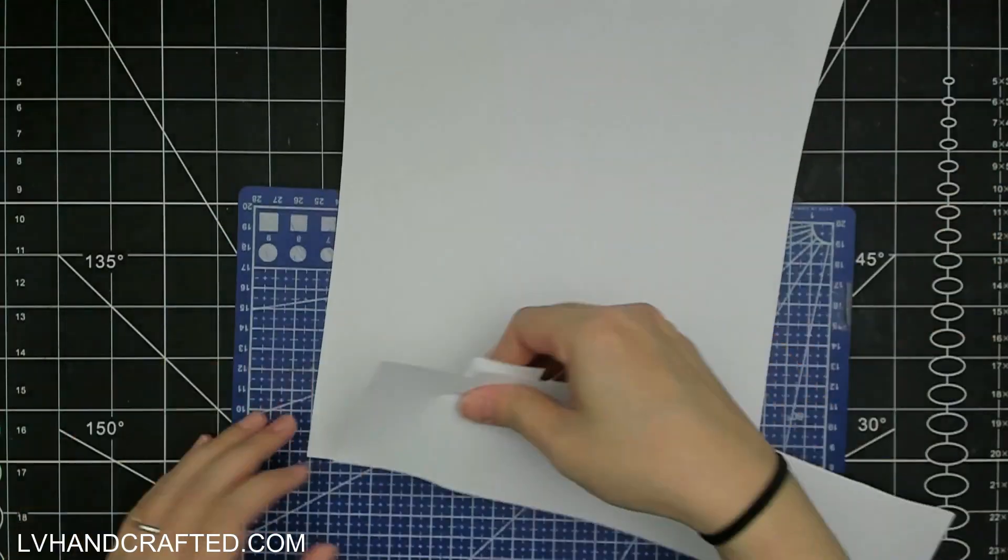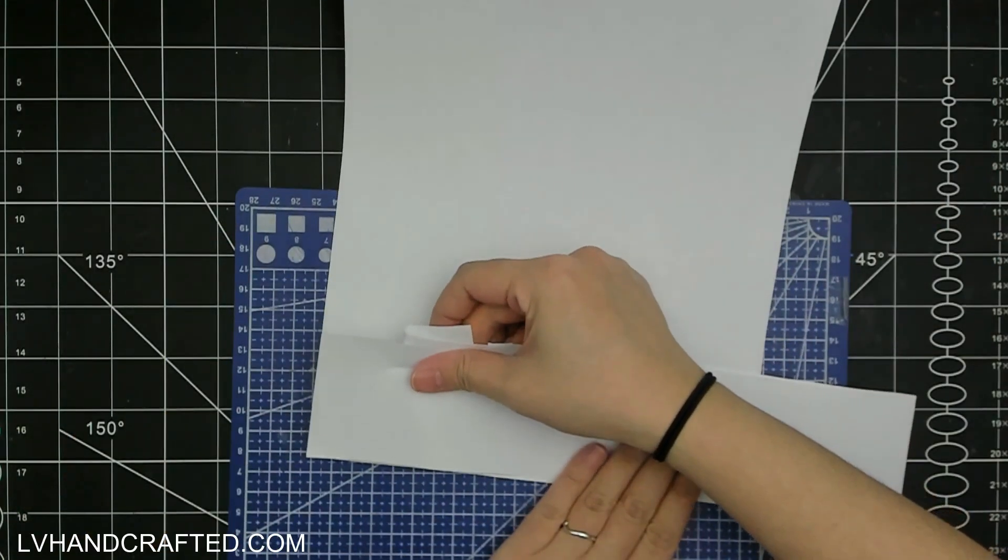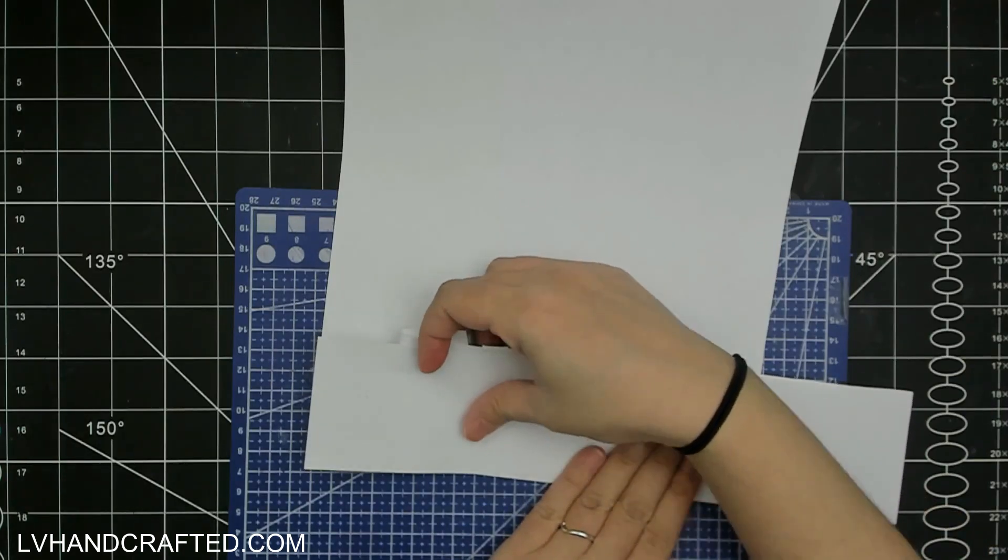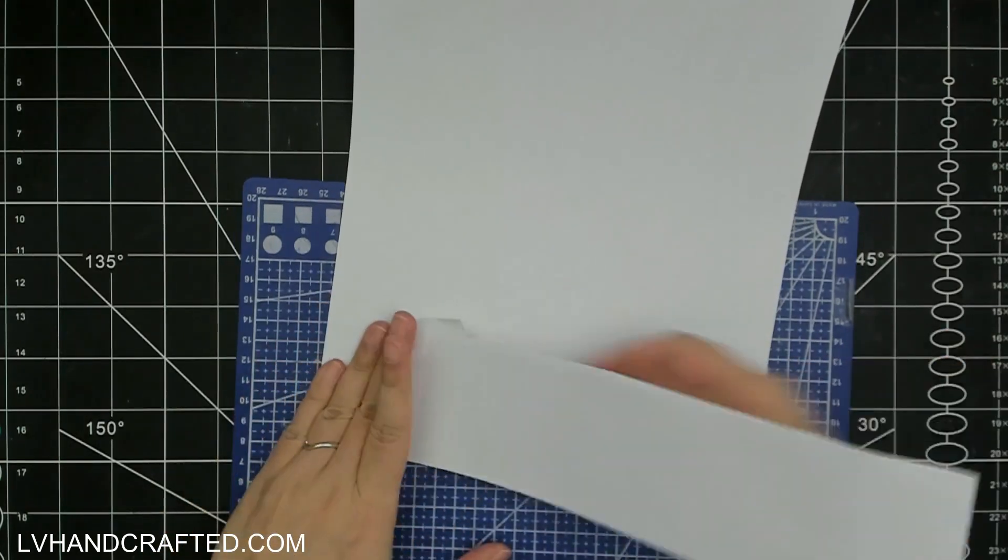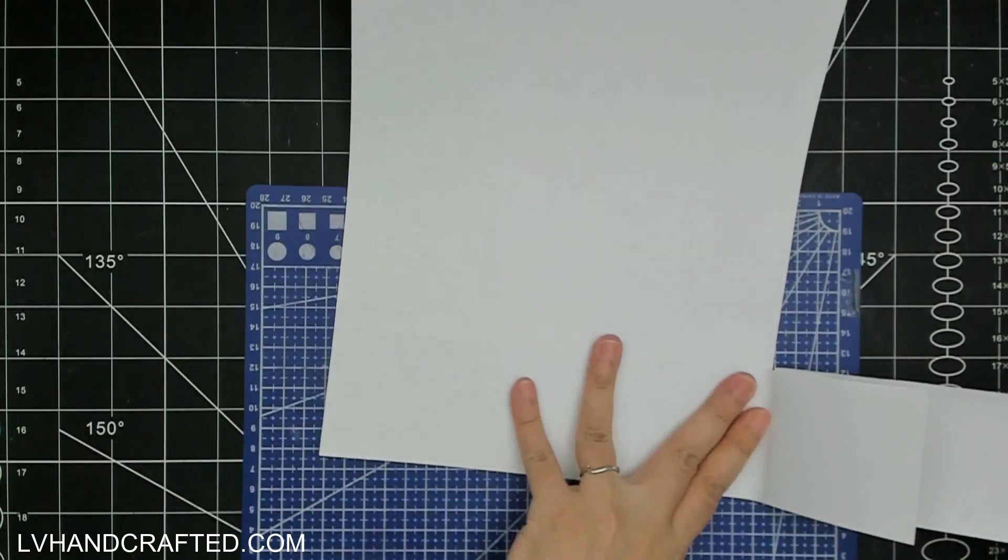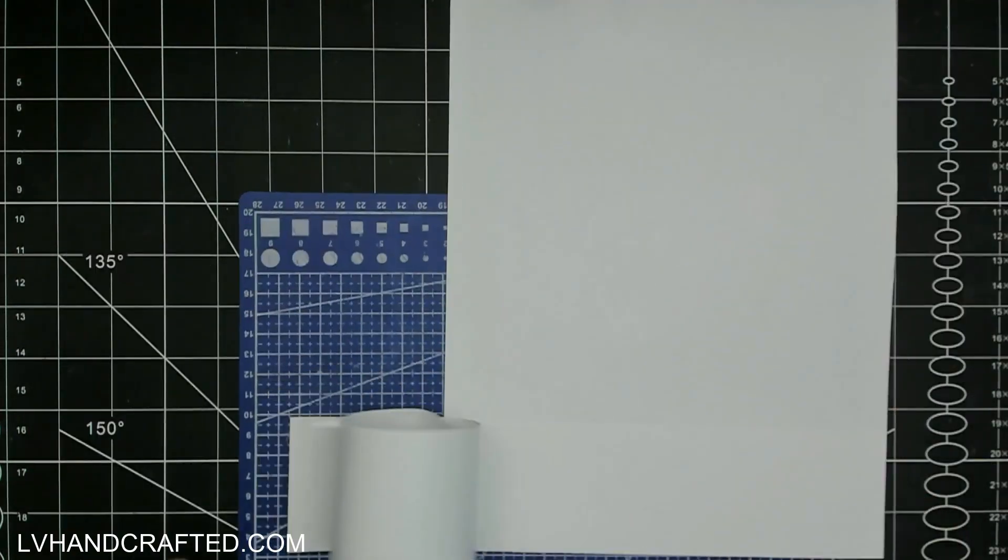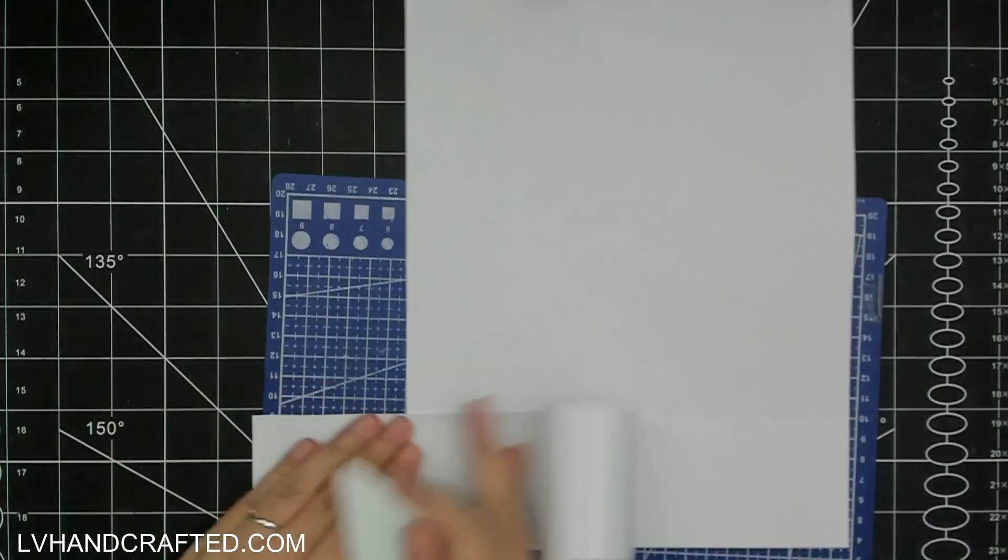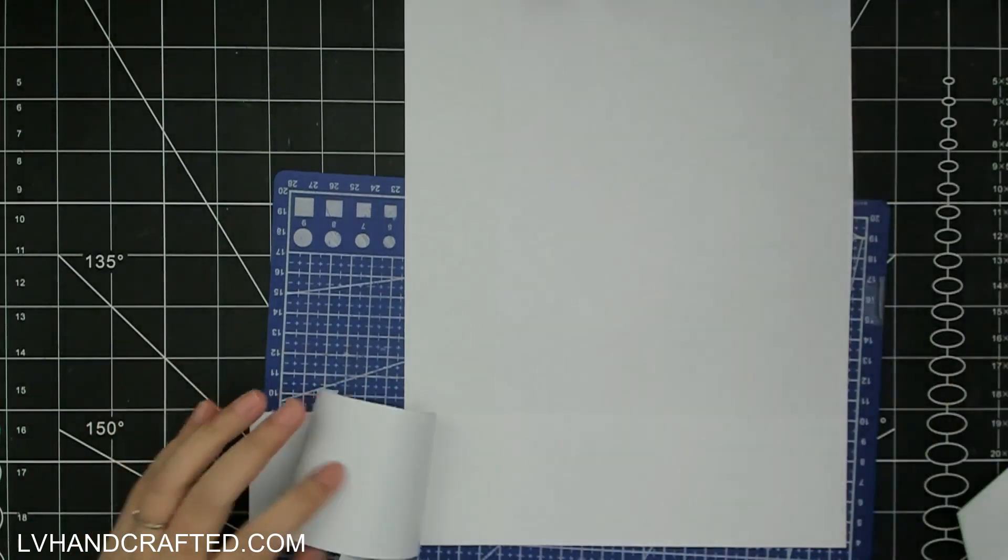But it definitely helps you find markers to blend together more easily when you do have a larger set, and Ohuhus are very very affordable. Okay, so now I'm going to move on to starting to put together the rest of my card.